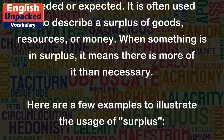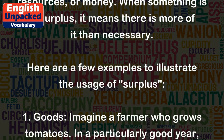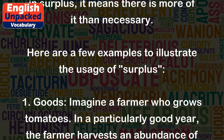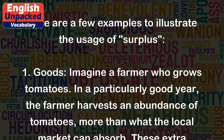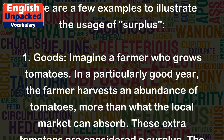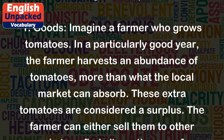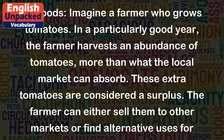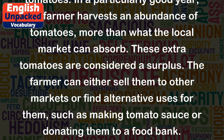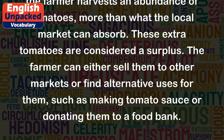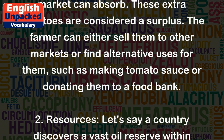Here are a few examples to illustrate the usage of surplus. One: Goods. Imagine a farmer who grows tomatoes. In a particularly good year, the farmer harvests an abundance of tomatoes, more than what the local market can absorb. These extra tomatoes are considered a surplus. The farmer can either sell them to other markets or find alternative uses for them, such as making tomato sauce or donating them to a food bank.